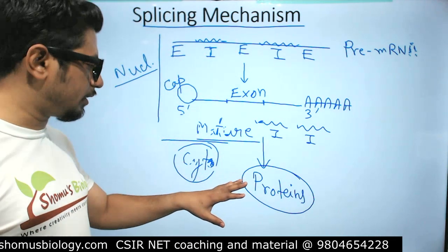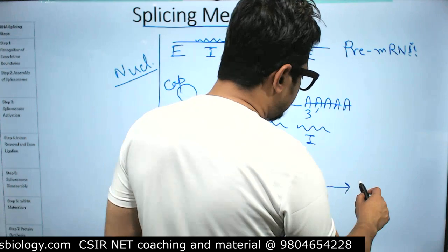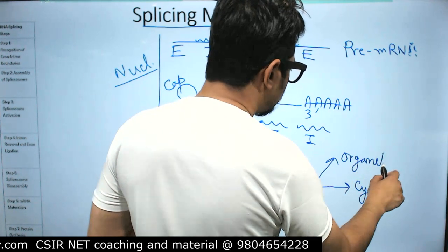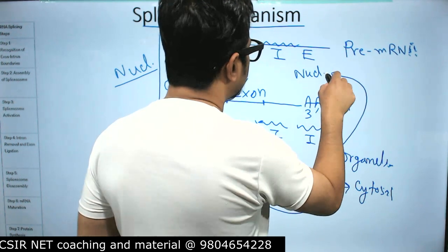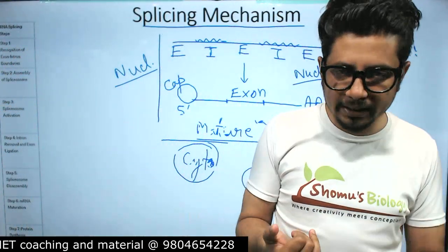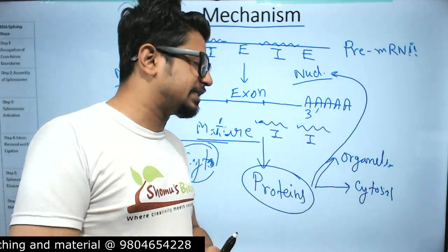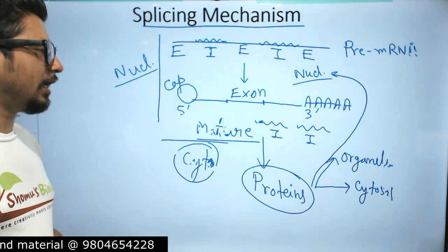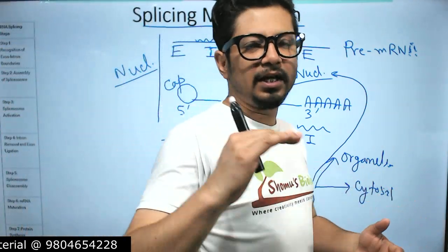Protein synthesis in eukaryotes always takes place in the cytosol. After producing proteins, some remain in the cytosol, some move to organelles, and some migrate inside the nucleus. Proteins are necessary in every part of the cell — in the nucleus, in mitochondria, chloroplasts, and other organelles. We have already discussed protein production and movement in separate lectures.